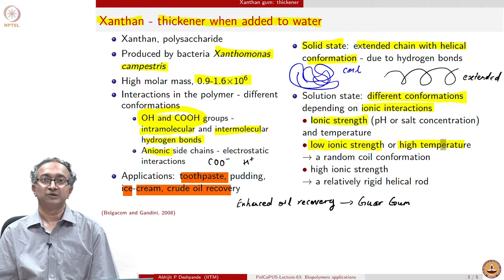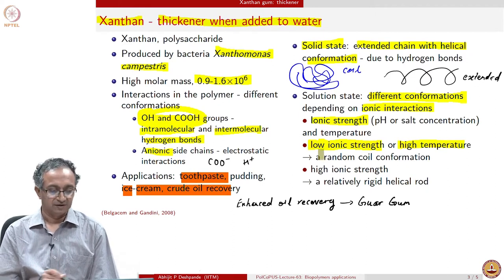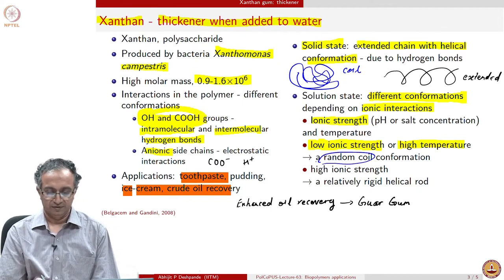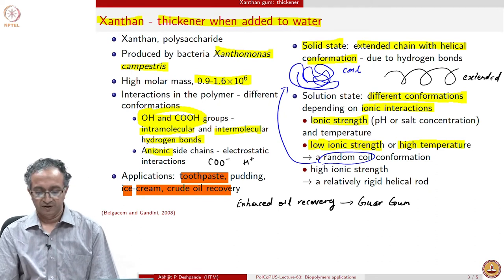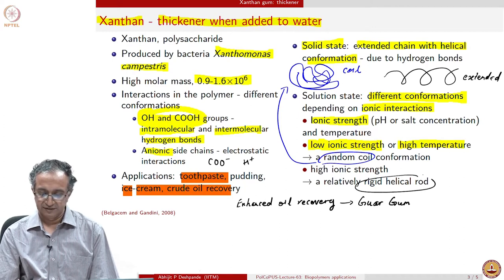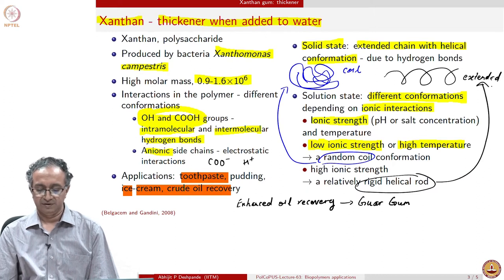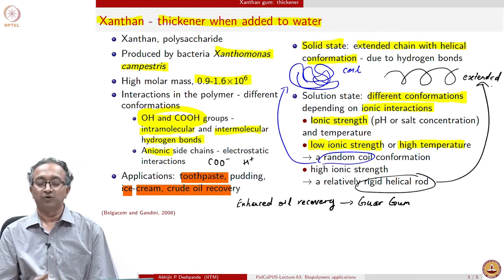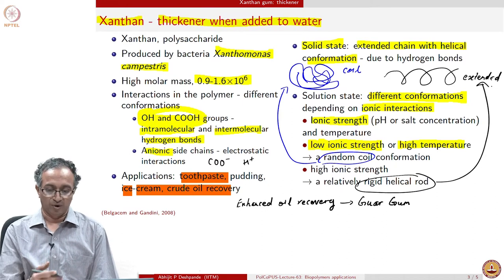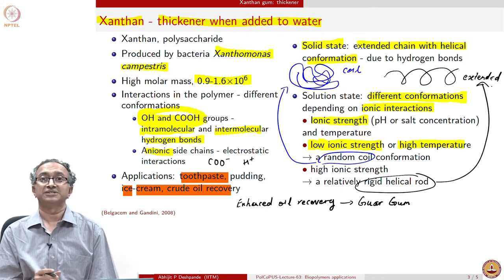If we consider ionic interaction in the numerator and thermal energy in the denominator, at low ionic strength or high temperature, the ratio is low and we have a random coil state. At low temperature or high ionic strength, the ratio is high and we have a rigid helical rod. We can also ask quantitatively: how extended is the chain, and what is the size of the polymer in each state?